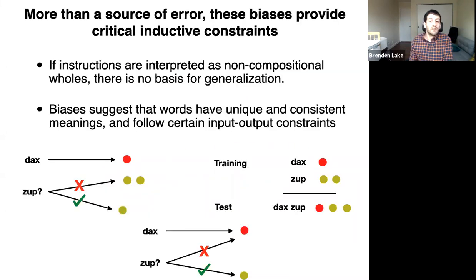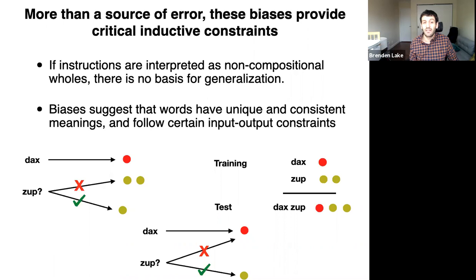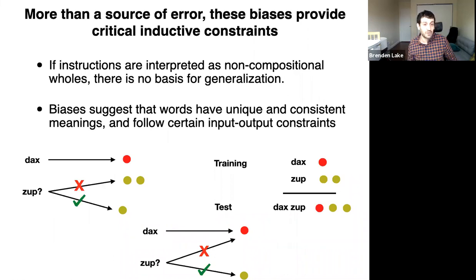More than a source of error, these biases provide critical inductive constraints. If you interpret these instructions as non-compositional wholes — not trying to decompose them into primitives and functions — then there's no basis to generalize to new commands, especially with a small dataset. These biases suggest that people come into a new problem understanding that words have unique and consistent meanings and follow certain input-output constraints. This is highly important to why people make sophisticated generalizations from just a few examples, far better than neural networks do after thousands.